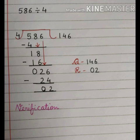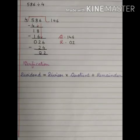Now let's verify it. Verify means to check. The formula to check the division sum is dividend is equal to quotient into divisor plus remainder.